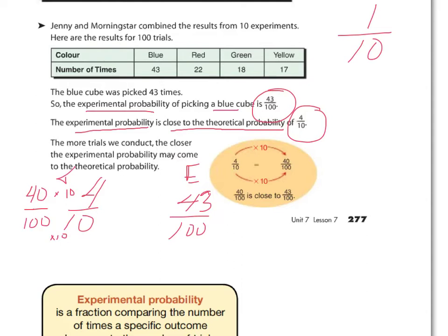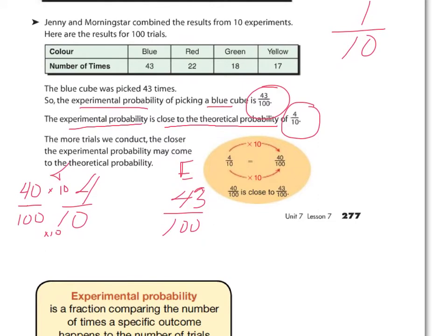Knowing what's theoretically supposed to happen the most still helps you make your choice. In this situation, knowing the cube counts — four blue, two red, two green, two yellow — tells us we're most likely to pull blue. Red, green, and yellow each had half as many cubes as blue, so they should appear about half as often. As we can see in our experiment, that is about what happened. We can always use theoretical probability to predict what will happen in an experiment, though results may vary.